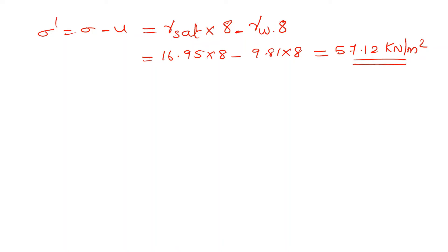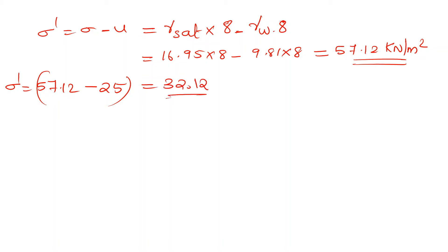The change in effective stress delta sigma dash must equal 25 kN/m². The current effective stress is 57.12 kN/m², and after dredging x meters it becomes 32.12 kN/m². We now remove x depth from the surface and set up the equation for the new effective stress.